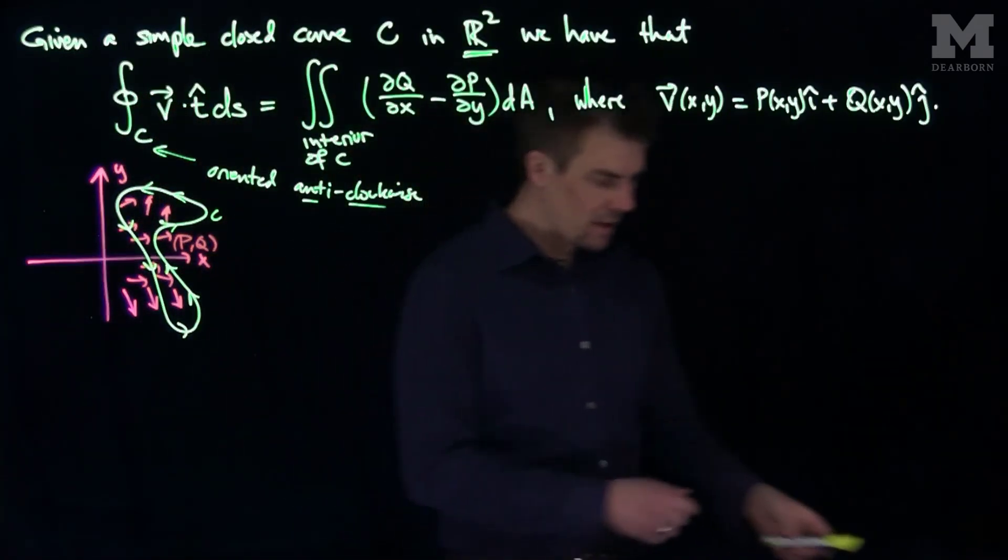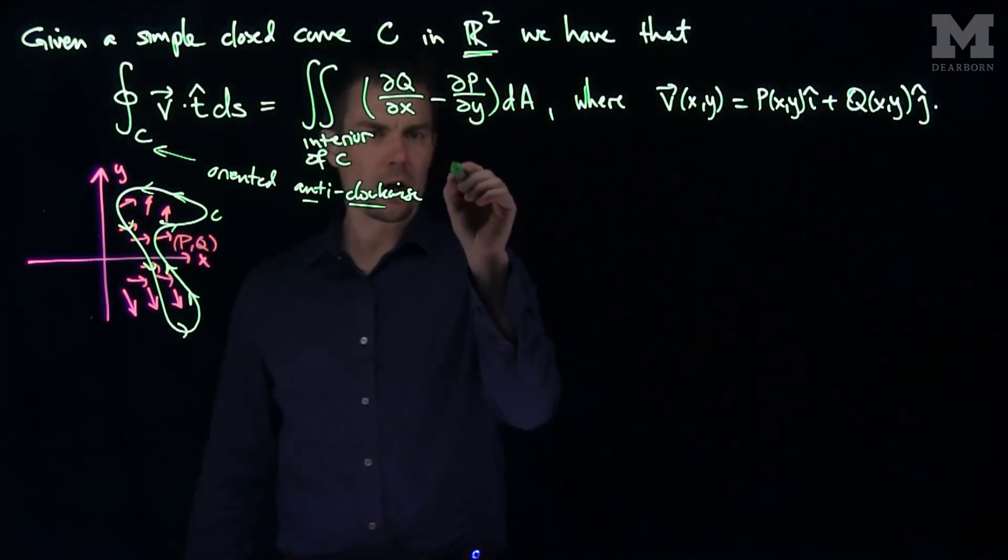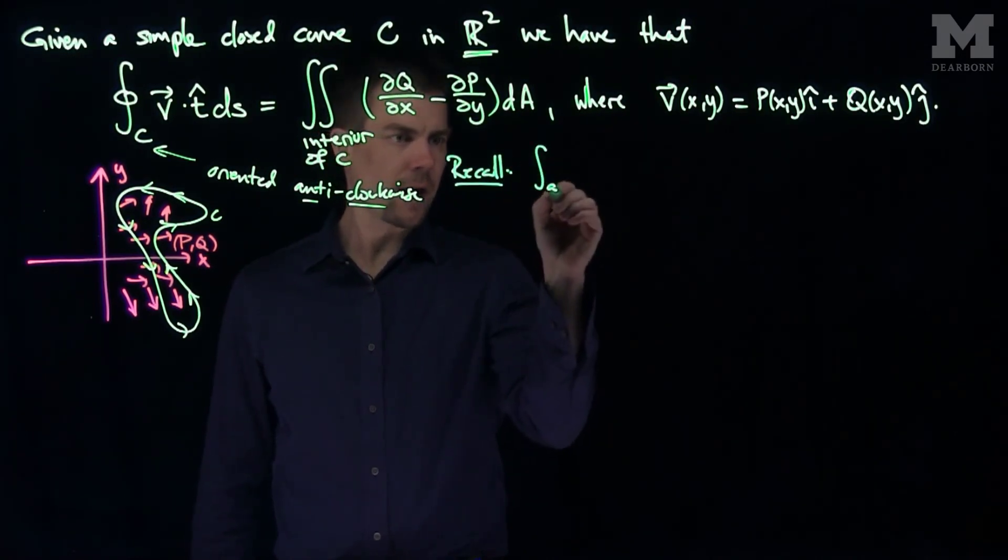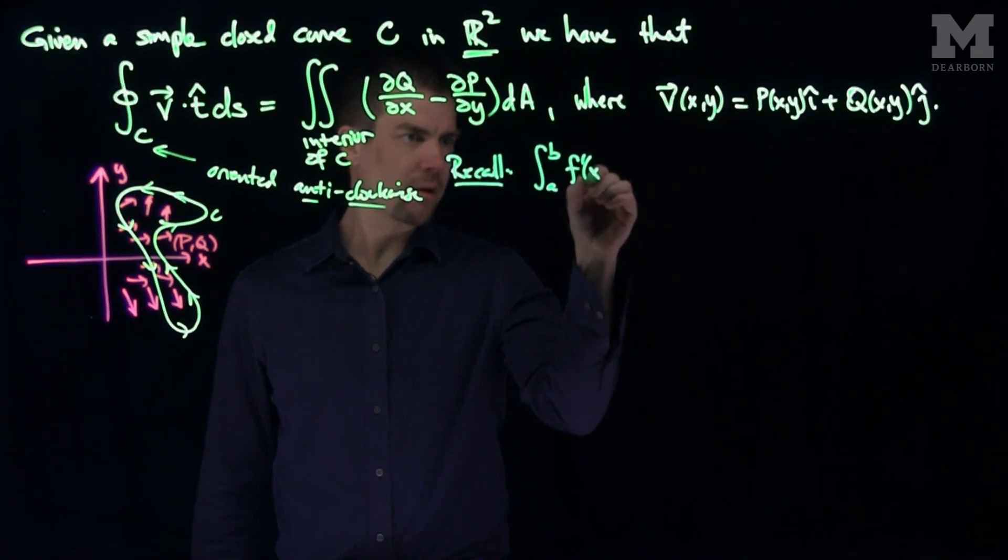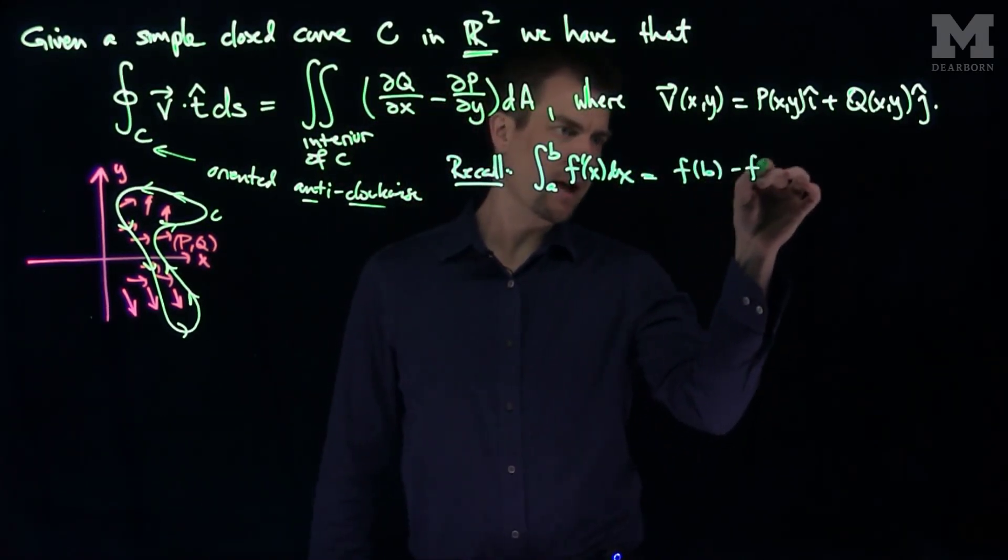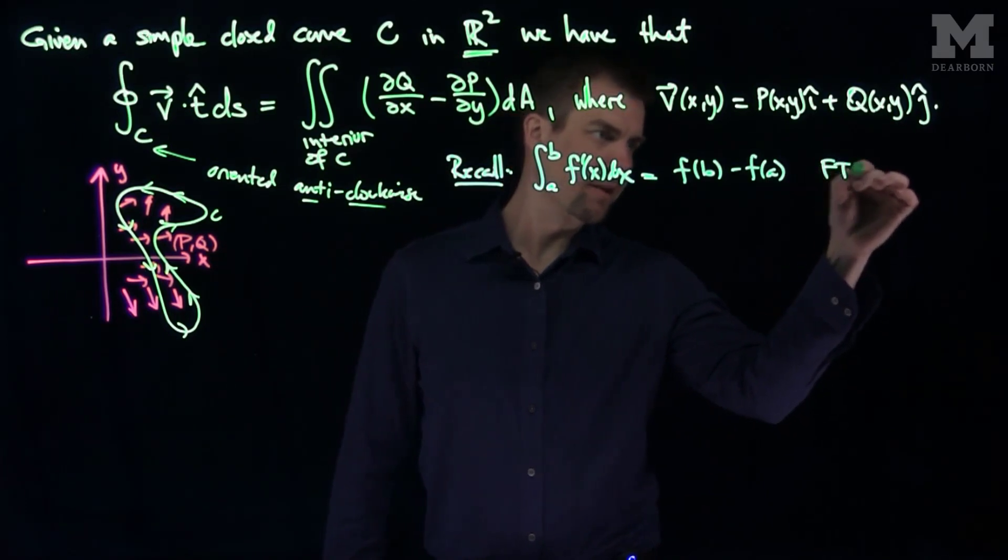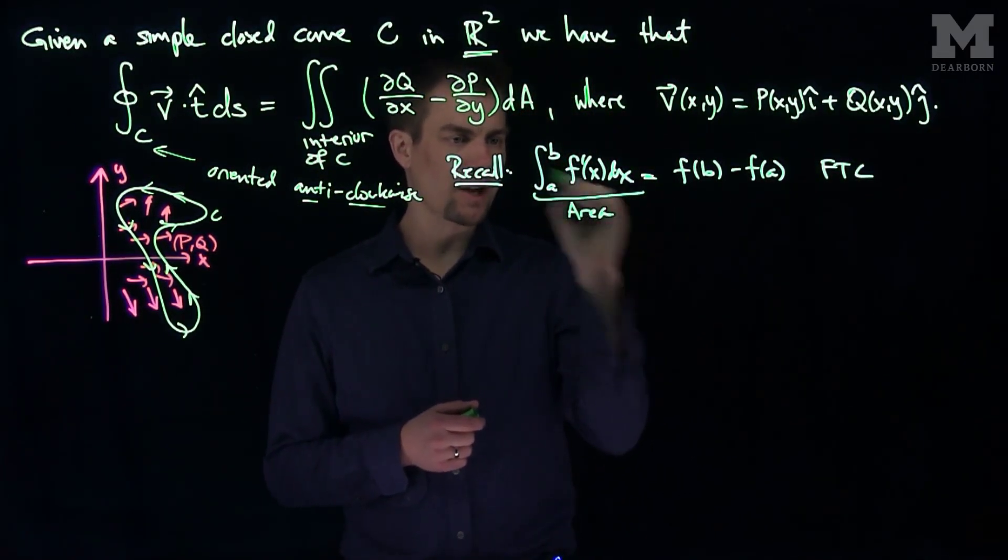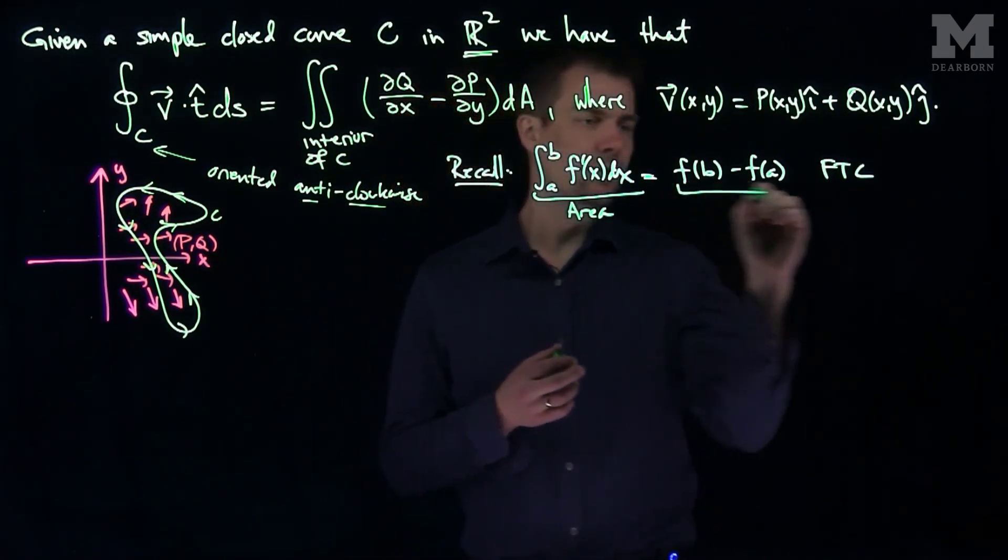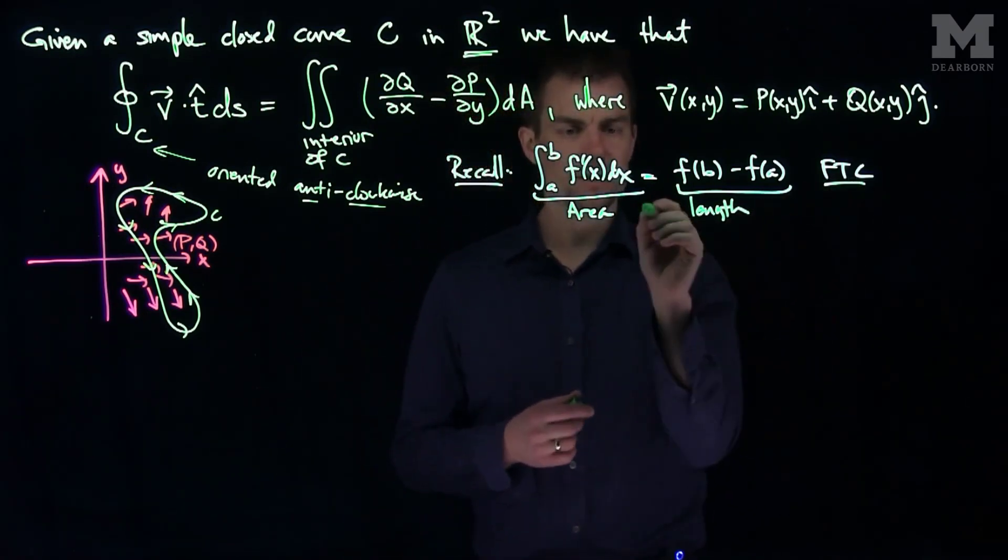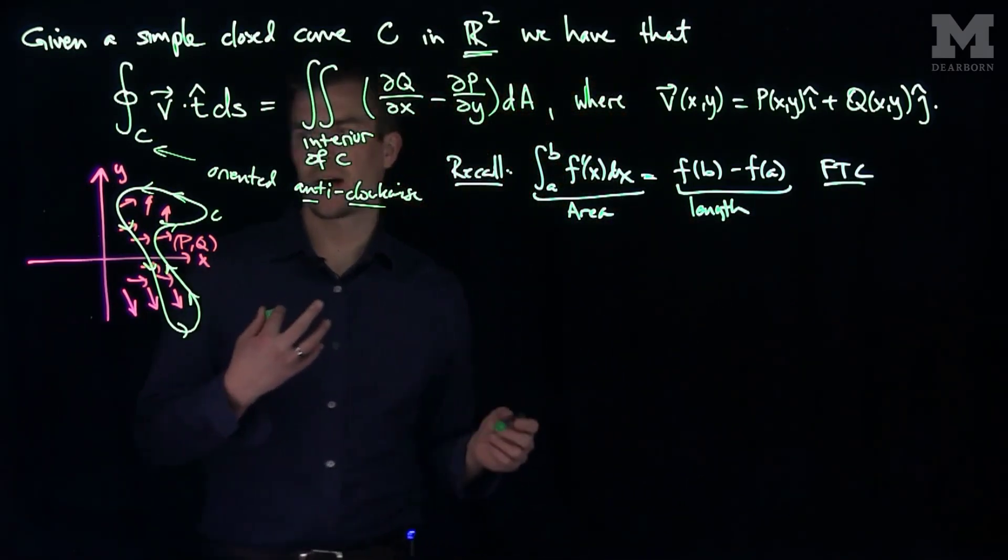And what this does is this is an analog of the fundamental theorem of calculus. Recall that the integral from A to B of F prime of x dx is equal to F(B) minus F(A). That's just the fundamental theorem of calculus, and what it does is relates an area over here, this integral is an area under the graph of F prime, to a length on the y-axis.